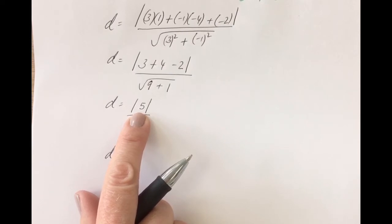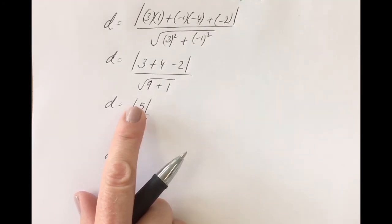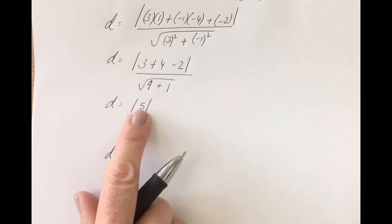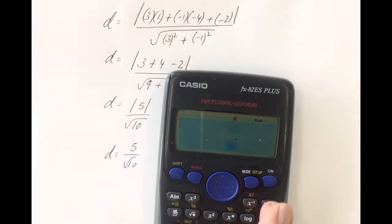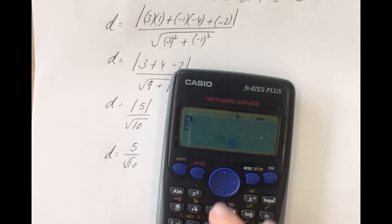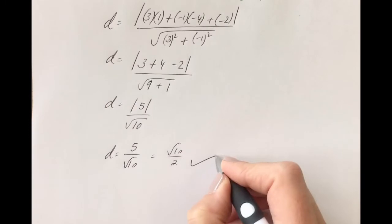For example, the distance of 5, considering how far 5 is from 0, is 5 units. And likewise, the modulus of minus 5 — how far minus 5 is from 0 — is also 5 units. So regardless of whether you've got a positive or negative, once it's in the modulus signs you always take the positive value. So 5 over root 10, which can be simplified — 5 over root 10 equals root 10 over 2. That is the distance.